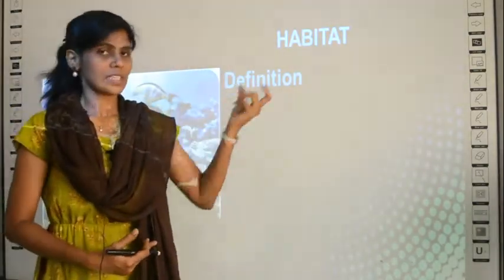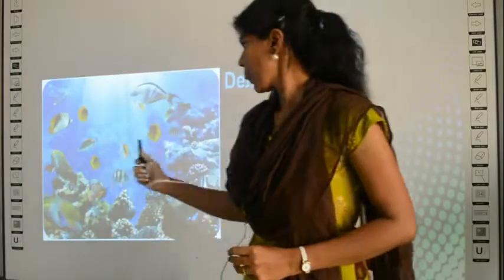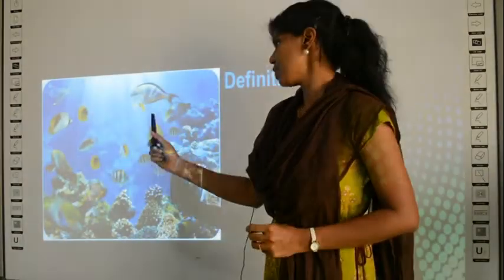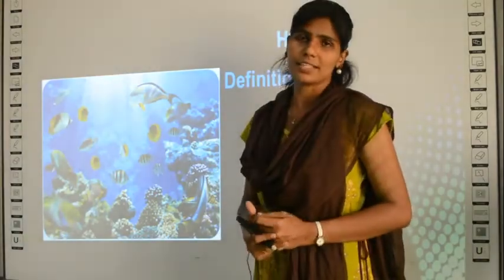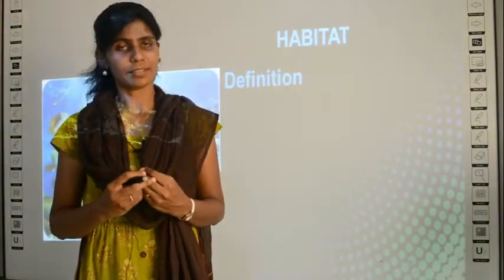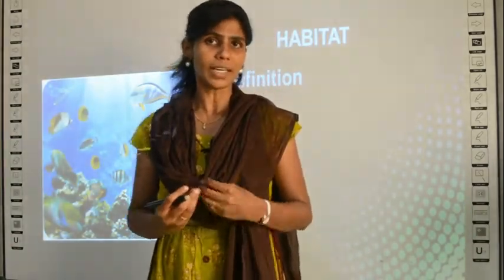What is habitat? In this picture you can see fishes. The habitat of this fish is water. Habitat is the place where an organism lives. For fishes, the habitat is water. The habitat for every organism in this world varies.